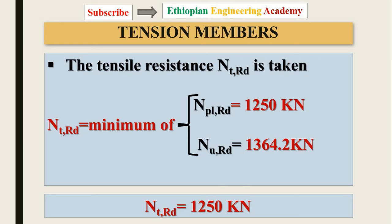That completes Example 2 for the staggered bolt configuration. In the next video I will discuss Examples 4 and 5 on tension members. Thank you for watching — please like and subscribe. Bye!